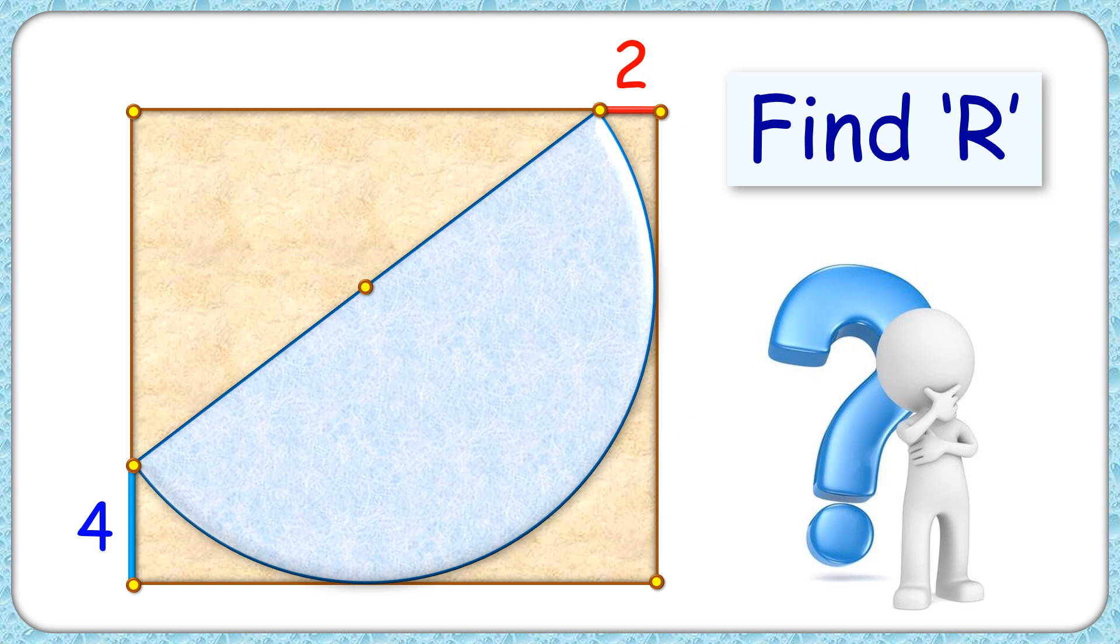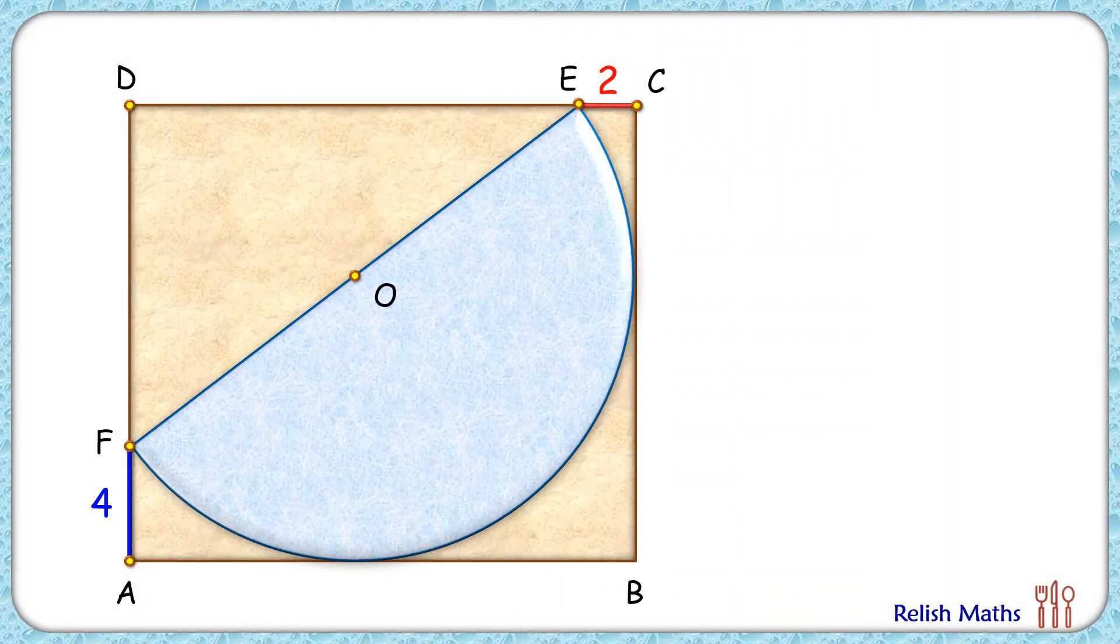The exciting part is with this limited data we have to find the radius of the semicircle. Let's check the solution.